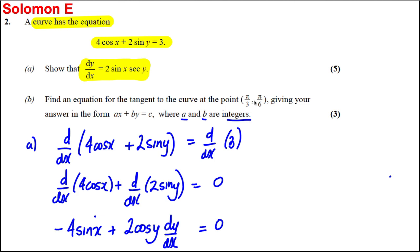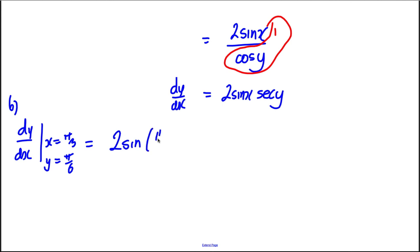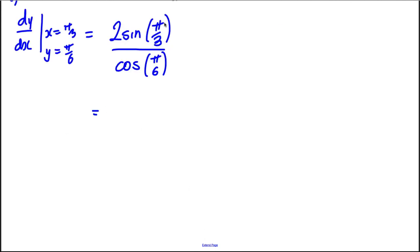We're going to let x = π/3 and y = π/6. So dy/dx at x = π/3, y = π/6 is equal to 2sin(π/3) × sec(π/6), which is 2sin(π/3) over cos(π/6). Now sin(π/3) is sin(60°), which equals root 3 over 2, and cos(π/6) is also root 3 over 2.